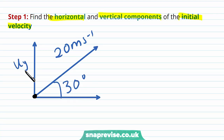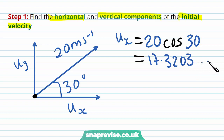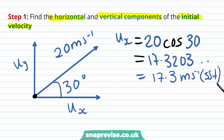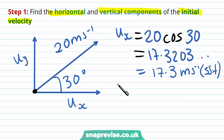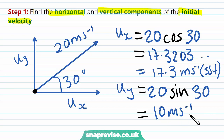We can resolve the 20 meters per second at 30 degrees into a vertical component uy and a horizontal component ux. So ux equals 20 cos 30, which gives 17.3 meters per second to three significant figures. The vertical component uy equals 20 sin 30, which gives exactly 10 meters per second.